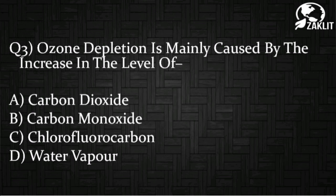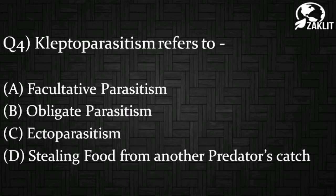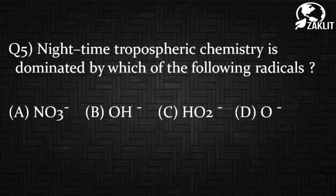Continuing with question three on ozone-depleting compounds. Question number four: kleptoparasitism refers to which kind of parasitism? Question number five: nighttime tropospheric chemistry is dominated by which of the following radicals?